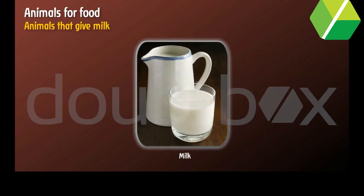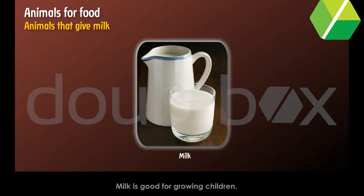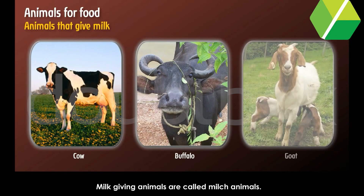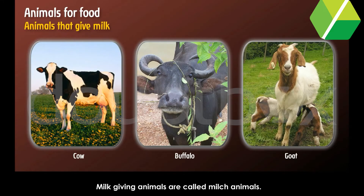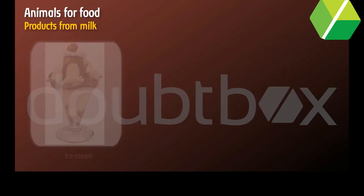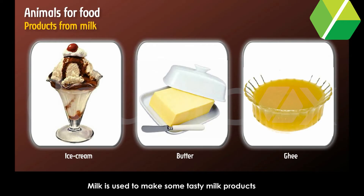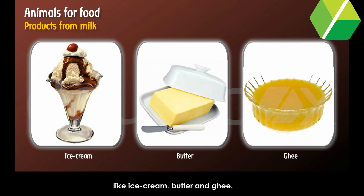Animals that give milk. Milk is a complete food. Milk is good for growing children and is the first food of newborn babies. Milk-giving animals are called milch animals, for example cow, buffalo and goat. Milk is used to make tasty milk products like ice cream, butter and ghee.